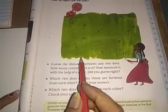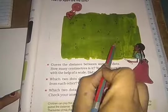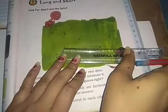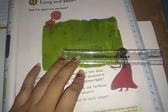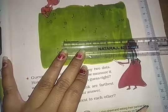First of all, we will guess. Suppose I am taking two dots, L and N. Now with the help of my scale, we will do the measurement. Here is zero, so on zero, I will put this dot here.